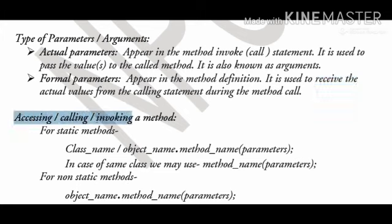How can we call any method? Accessing or calling or invoking a method: For static method, if method is static declared, then it can be called by using class name or by using object name. Class name or object name dot method name, after that parameters. In case of same class, we may use method name with parameters. If method is calling in same class in which it is declared, then we can call the method without using class or object name.